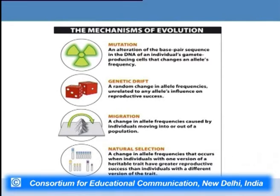The four processes are: first, mutation — the alteration of the base pair sequence in the DNA of an individual. Only if a mutation occurs in the gametes can it pass from one generation to another. If it occurs in the body of the organism it won't be passed down. So for mutation to drive evolution it must occur in the gametes.